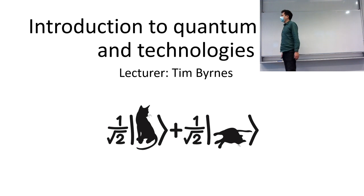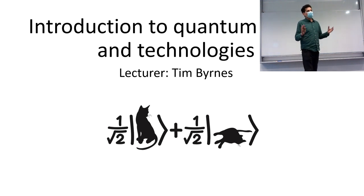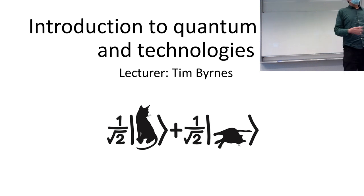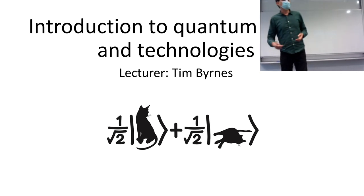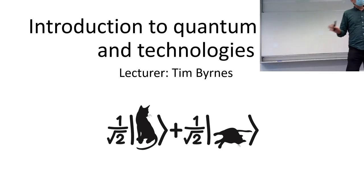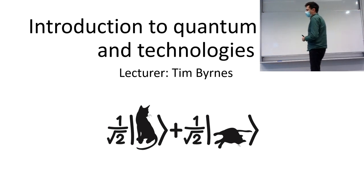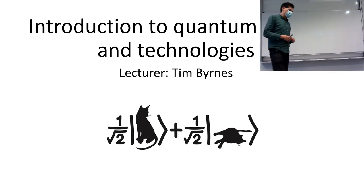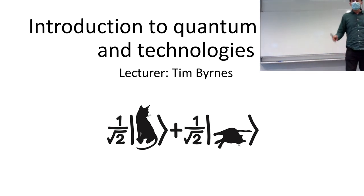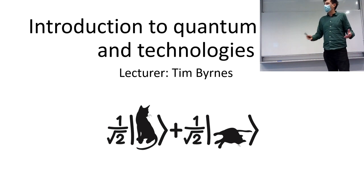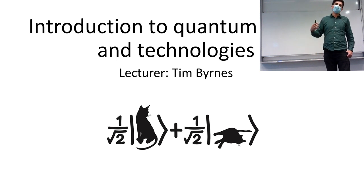Things like wave functions — traditionally in a quantum mechanics course you start with the Schrödinger equation, solve wave functions, look at the hydrogen atom, and do more complicated things. I'll basically skip over all that. There's a simpler way to view it — when I say simple, it's relatively simple, much simpler than the original theory — and I hope I can convey that to you.